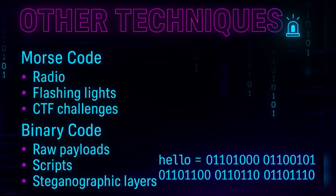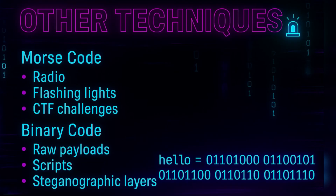Binary code — everything boils down to ones and zeros. For example, 'hello' in binary is a specific sequence shown on screen. You can find binary encoding in payloads, exploit scripts, and steganography tools.